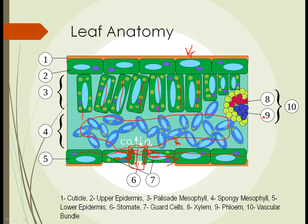Over here we see this little bundle of materials — together that's called a vascular bundle. It consists of the two things we talked about before: the xylem, which moves material up through the plant, and the phloem, which carries finished materials back down to places where they're needed.